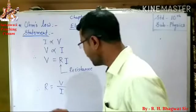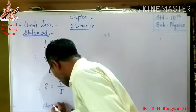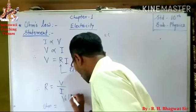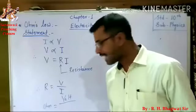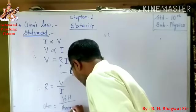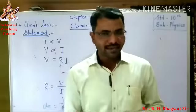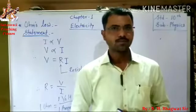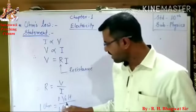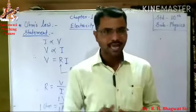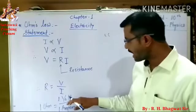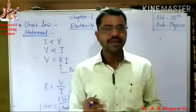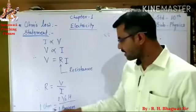The SI unit of resistance is ohm. One ohm is equal to one volt divided by one ampere. Therefore, from this equation we can define one ohm resistance as: when the potential difference applied across the conductor is one volt and the current flowing through that conductor is one ampere, then we can say that the resistance of that conductor is one ohm.